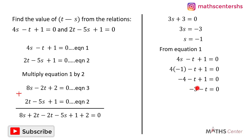This will give us negative 3 minus t equals zero. And so we will have t equals negative 3. So the value of x is negative 1 and the value of t is negative 3.